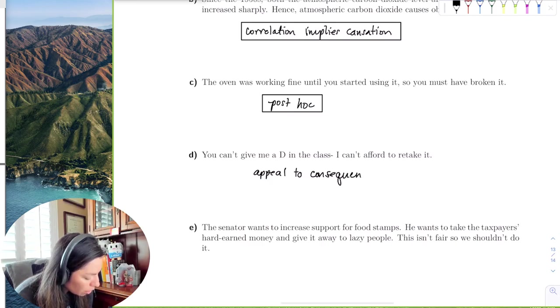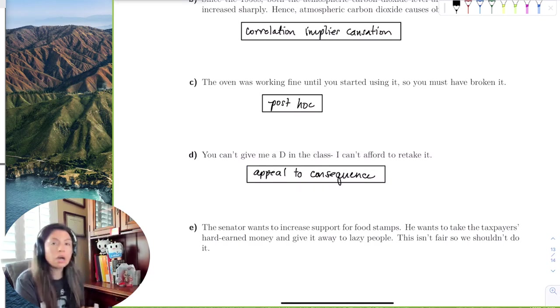So this is appeal to consequence argument. This student is trying to argue by using the consequence of what will happen rather than the cause of what happened.